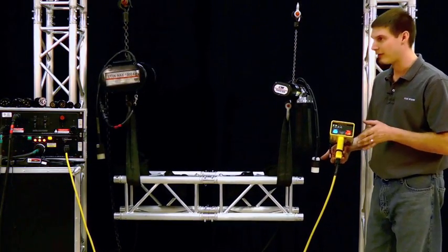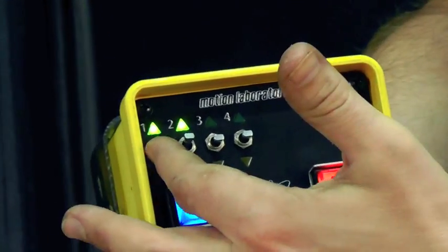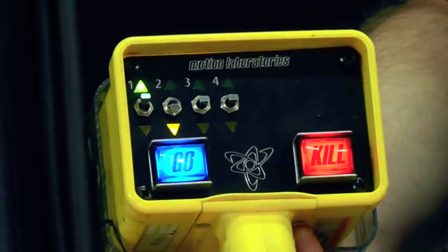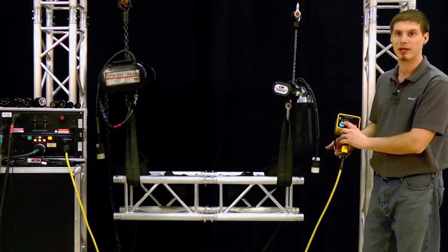Now if I want to run both of them in different directions I can select motor one running up and motor two running down. Press go and we can start to cant the truss a bit.